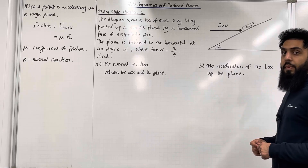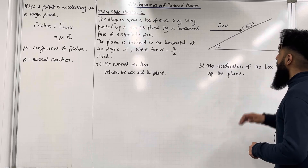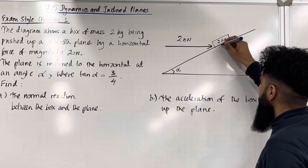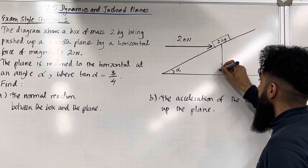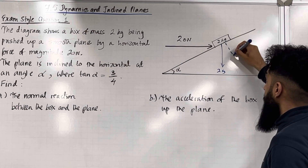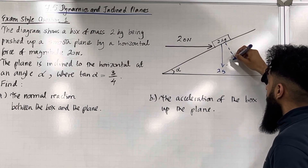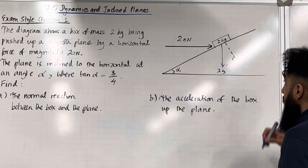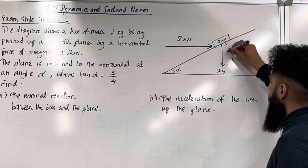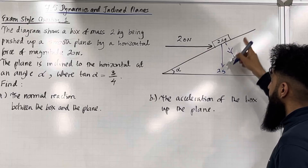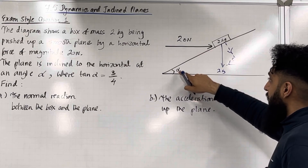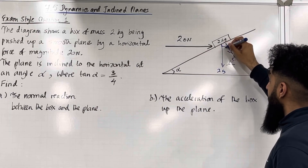I'm going to start off by labelling all the forces acting on this particular box. We have the weight acting vertically downwards — that weight is 2g. For this weight we can construct a right angle triangle. This component over here is perpendicular to the plane, and this component over here is parallel to the plane. Since this angle is alpha, it can be shown that this angle is also alpha.